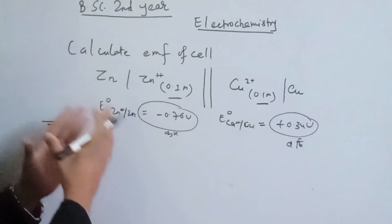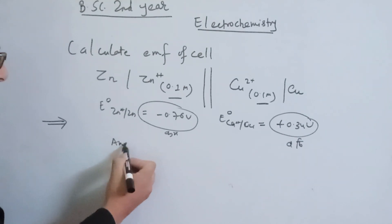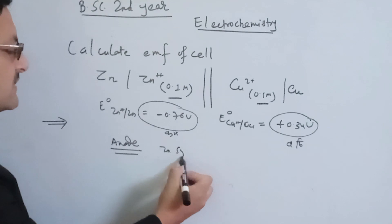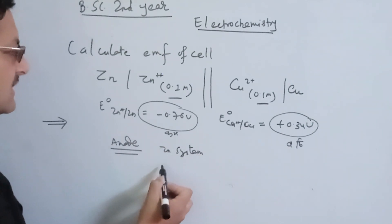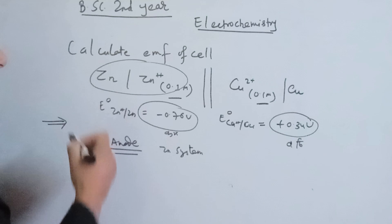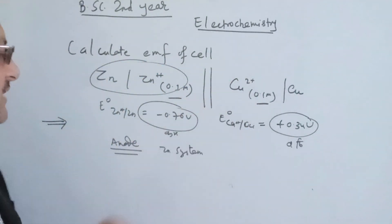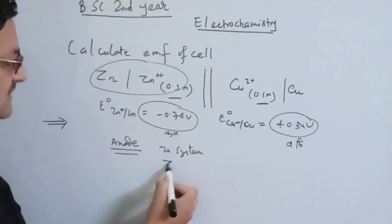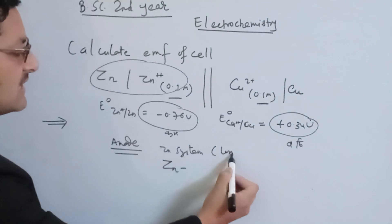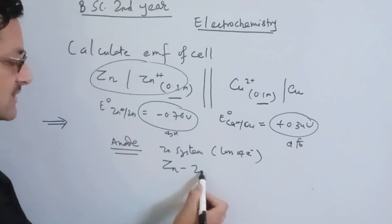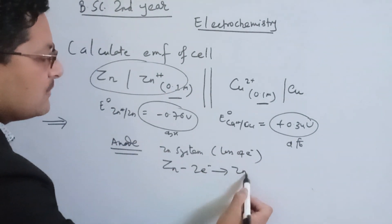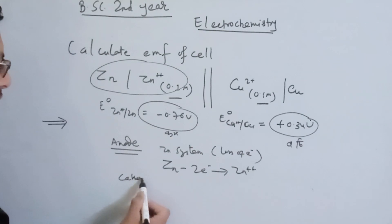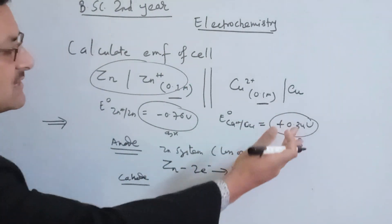The anode is the zinc system — zinc loses electrons. The anode reaction is: Zn → Zn²⁺ + 2e⁻. For the cathode group, the cathode is the copper system. The cathode reaction is: Cu²⁺ + 2e⁻ → Cu. This is the gain of electrons at the cathode.